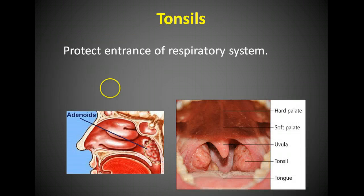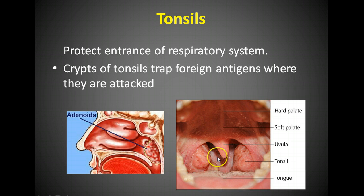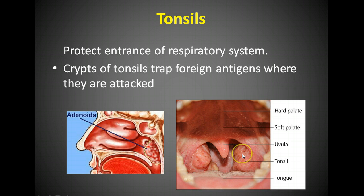Tonsils are a crucial part of the lymphatic system — they protect the entrance of the respiratory system and are like large lymph nodes. Because you bring foreign material in through your mouth, tonsils serve as protection against that. The problem is when they are constantly swollen. The pharyngeal tonsils are called adenoids when swollen or infected, and they can cause problems — including limiting the person's ability to breathe. If tonsils are constantly swollen and infected, they can be very painful.